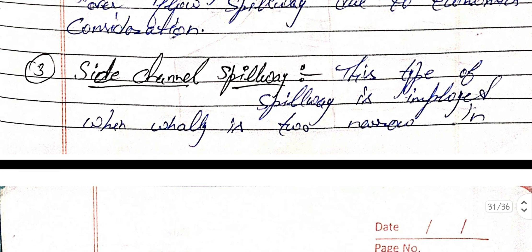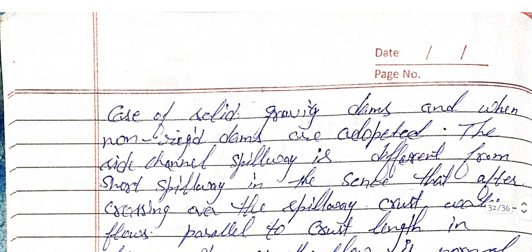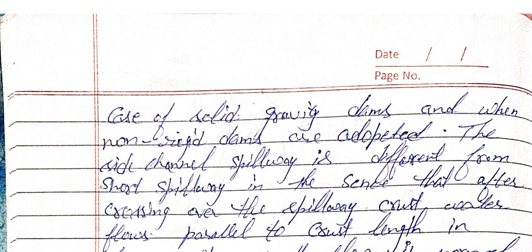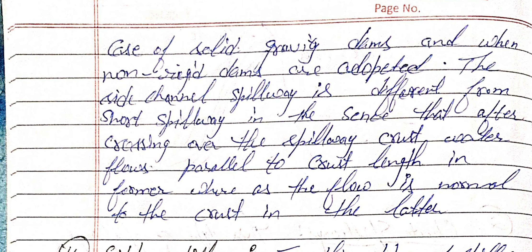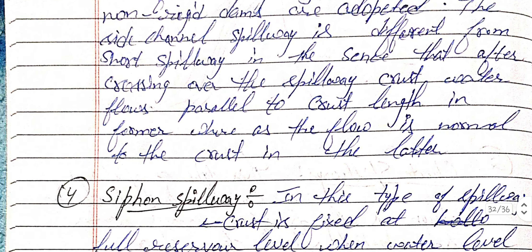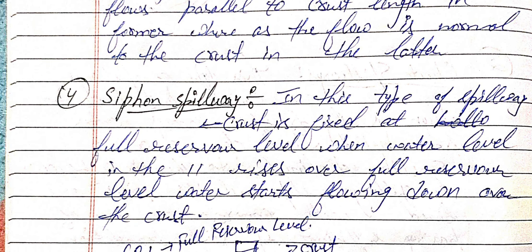Next is the side channel spillway. This type is employed when a valley is too narrow, in the case of solid gravity dams, and when non-rigid dams are adopted. The side channel spillway differs from the chute spillway in that after crossing over the spillway crest, water flows parallel to the crest length, whereas in the chute spillway the flow is normal to the crest.